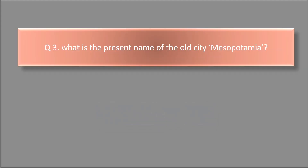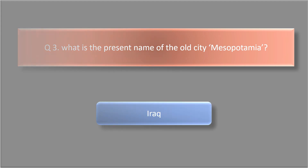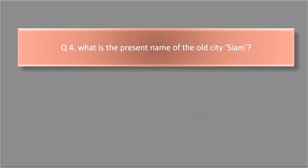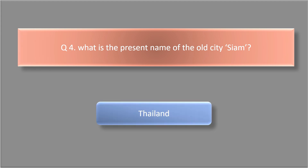What is the present name of the old city Mesopotamia? The answer is Iraq. What is the present name of the old city Siyam? The answer is Thailand.